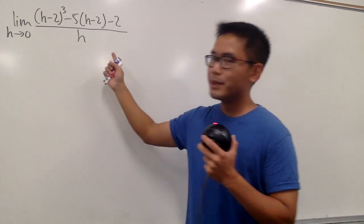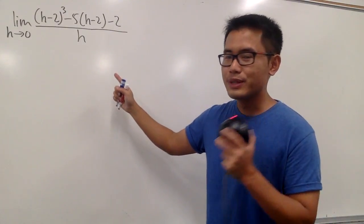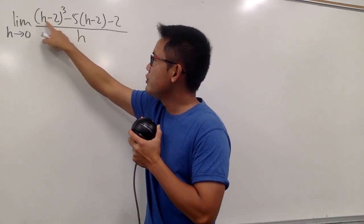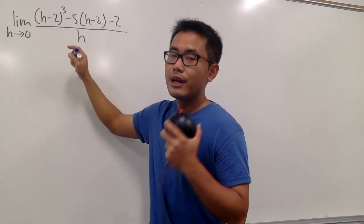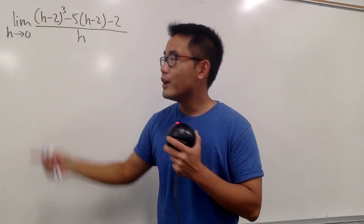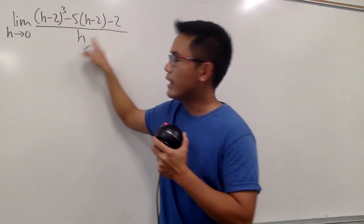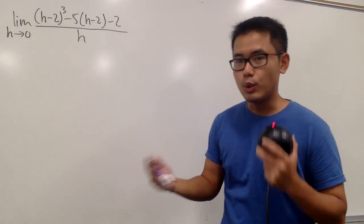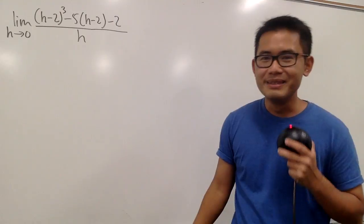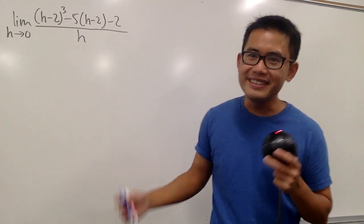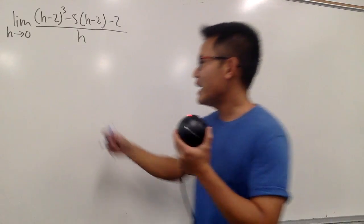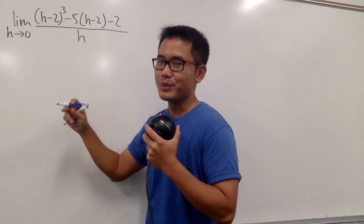What's so special about this limit question? As we can see, we have this term h minus 2 and then to the third power. Before we do anything, we should plug in 0 into all the h first to see what we have. And most likely it will be 0 over 0, because life is not easy and we are going to do more work most of the time. Let me show you guys the work.